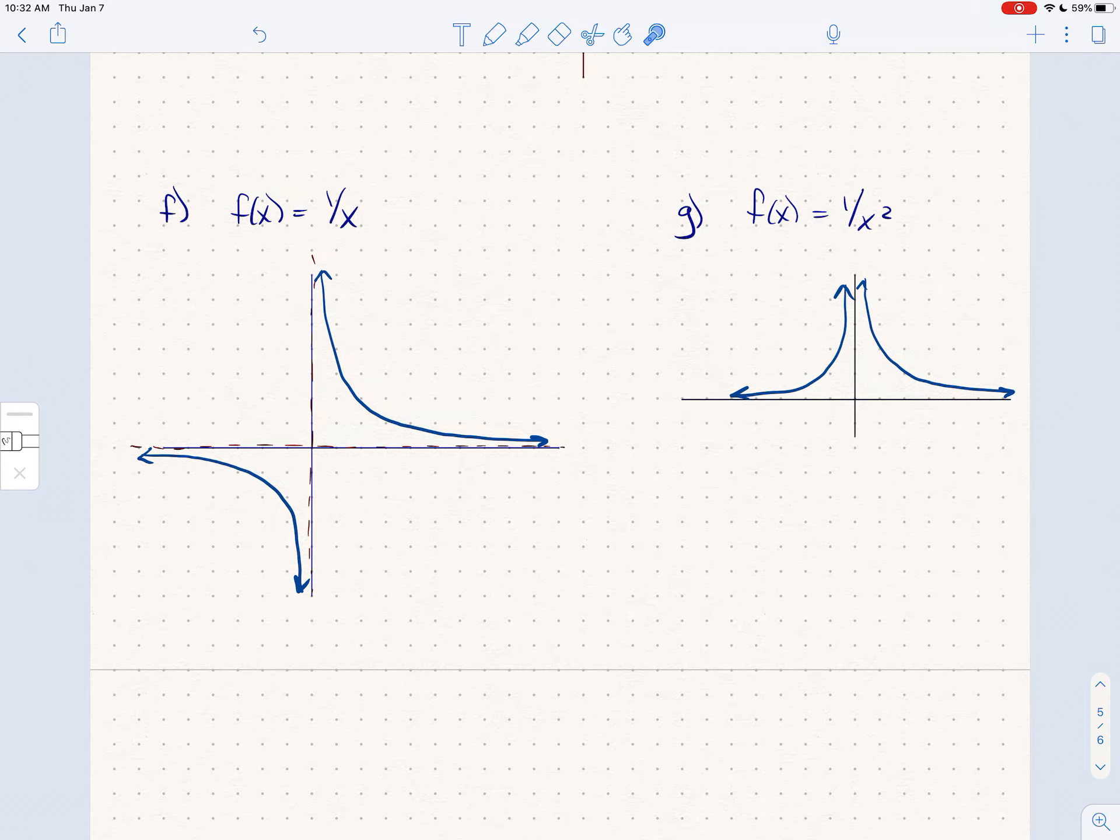And then 1 over x squared is similar. Vertical asymptote, horizontal asymptote. The difference is both sides are shooting up to infinity around 0. And if you think about it you can see why.